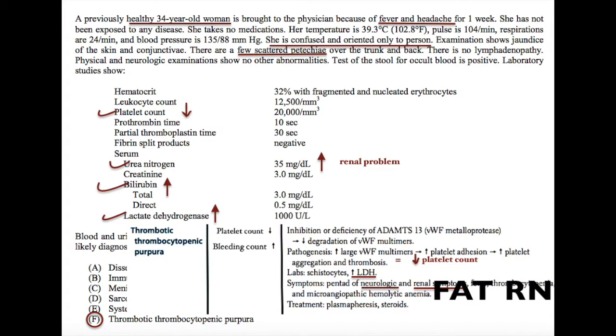These can be remembered with the memory aid FAT-RN, which stands for fever, anemia, thrombocytopenia, renal, and neurologic.